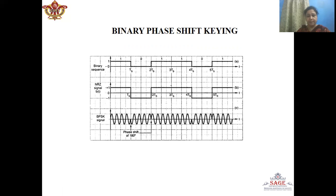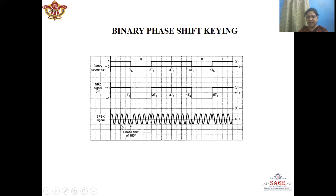Here we can see BPSK using waveforms. We have a binary sequence consisting of 1s and 0s, where 1 is represented by high voltage level and 0 by zero voltage level. First, this binary sequence is changed into a non-return-to-zero bipolar signal B(t), where 1 is represented by positive voltage level and 0 by negative voltage level. When the message signal is 1, there is the carrier signal as it is. But when the message signal changes, there will be a phase shift of 180 degrees. When there is a change in the message signal from −1 to +1, again there will be a phase shift of 180 degrees. So whenever the message signal changes, there will be a phase shift of 180 degrees in the modulated signal.